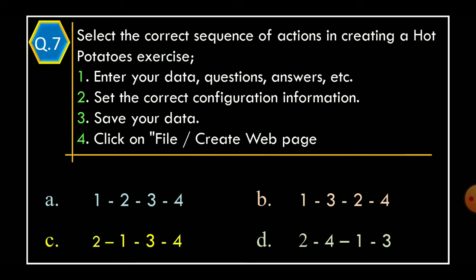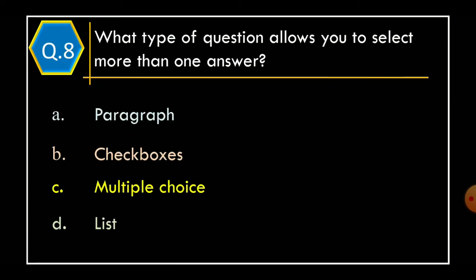And the correct option is Option A, 1-2-3-4. Question 8. What type of question allows you to select more than one answer? Option A, Paragraph; Option B, Checkboxes; Option C, Multiple Choice; Option D, List. And the correct option is Option B, Checkboxes.